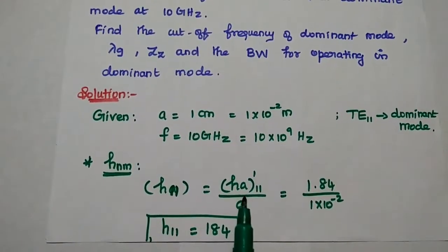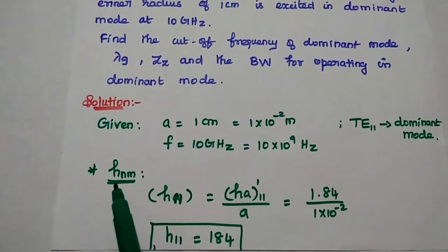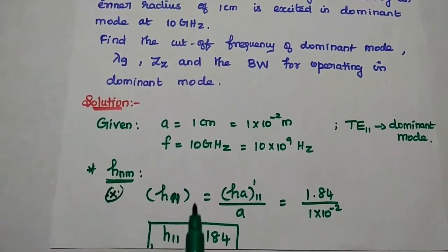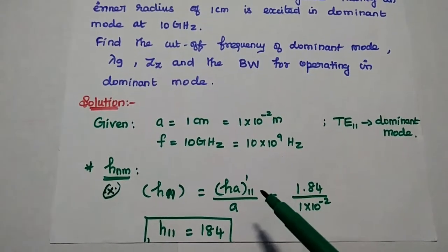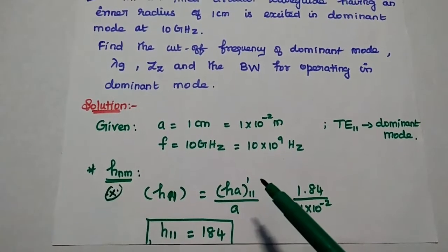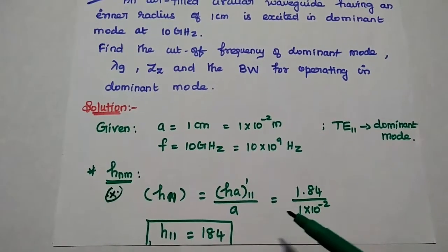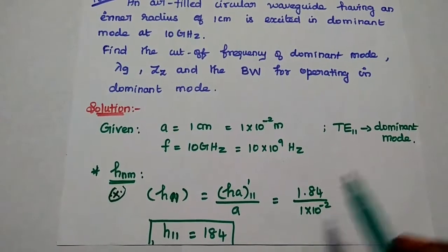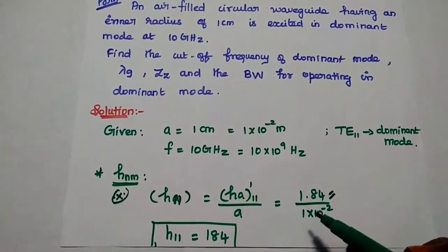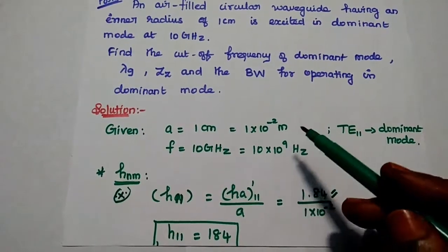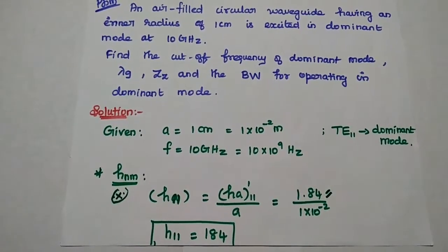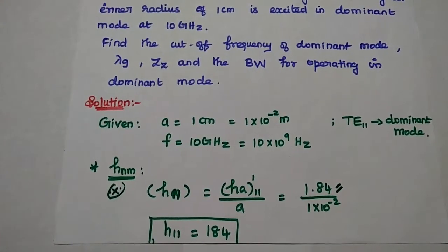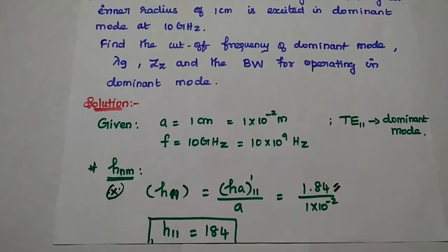First we are going to find out the H_nm value, which is a very important parameter in circular waveguide. That is equal to H'_11 divided by a. This dash represents TE waves. For the TE11 wave, the H'_11 value is 1.84 — you have to remember this value. Divided by the radius value 1 × 10⁻² m, we get the answer as 184.